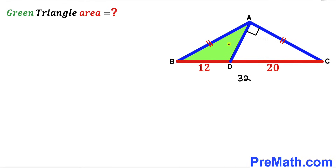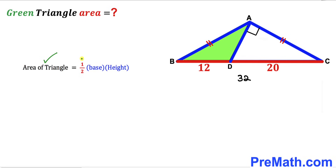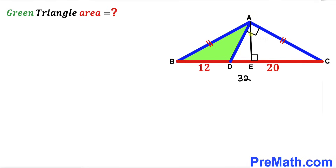Now since our task is to calculate the area of this green shaded triangle, let's recall the area of a triangle formula: area is always equal to one half times the base times the height of the triangle. We know the base of this green shaded triangle is 12, so our task is now to find the height. We have dropped this perpendicular AE on side BC.